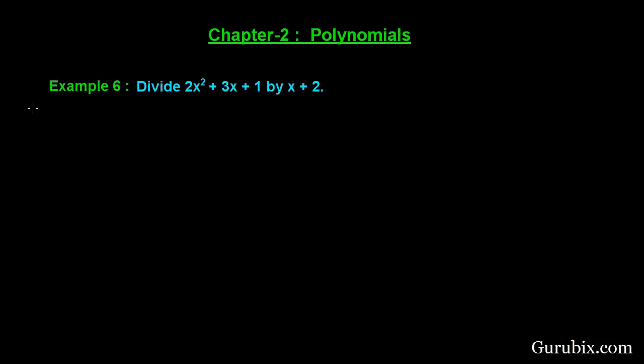So let us see how to do it. This is very interesting. First of all we shall write the dividend polynomial in its standard form, that is 2x square plus 3x plus 1. Now we shall write the divisor here, and we shall write the divisor in its standard form also.